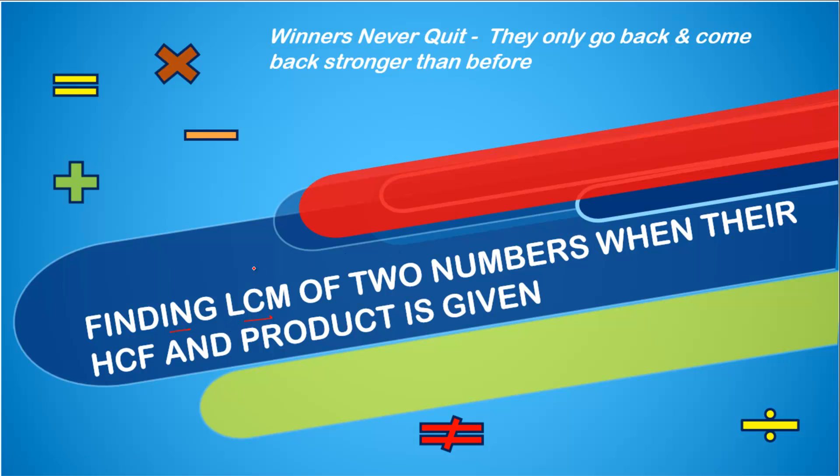Finding the least common multiple (LCM) of two numbers when their HCF (highest common factor) and product are given. Suppose there are two numbers, let's call them A and B.